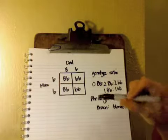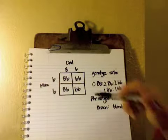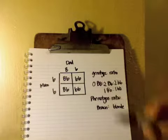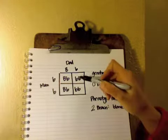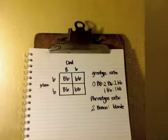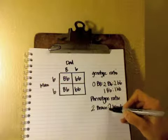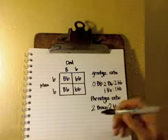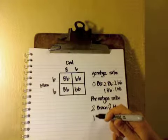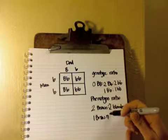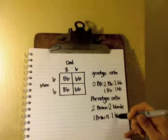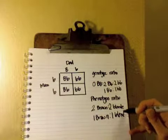Phenotype ratio is what the feature looks like. These that have a capital B will have brown hair, so those two are going to have brown hair. These two that have no capital Bs are going to look blonde, so those two will be blonde hair. Again, you could reduce it and say you have a one to one chance of having blonde or brown hair.